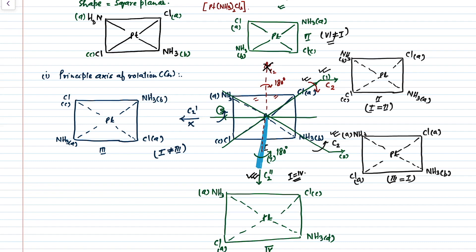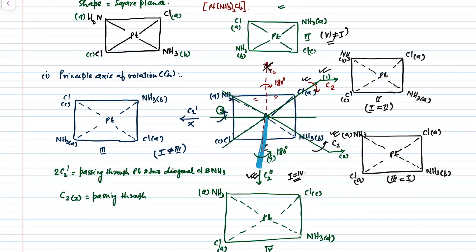So, the conclusion after performing symmetry operations about all the different axes: this molecule has two principal C2 axes of rotation — two C2-dash axes passing through platinum and the two diagonal chlorine and ammonia molecules. And once C2 is present — which is the Z-axis passing through platinum and perpendicular to the molecular plane. I hope everyone understood the presence of Cn symmetry elements in this molecule.